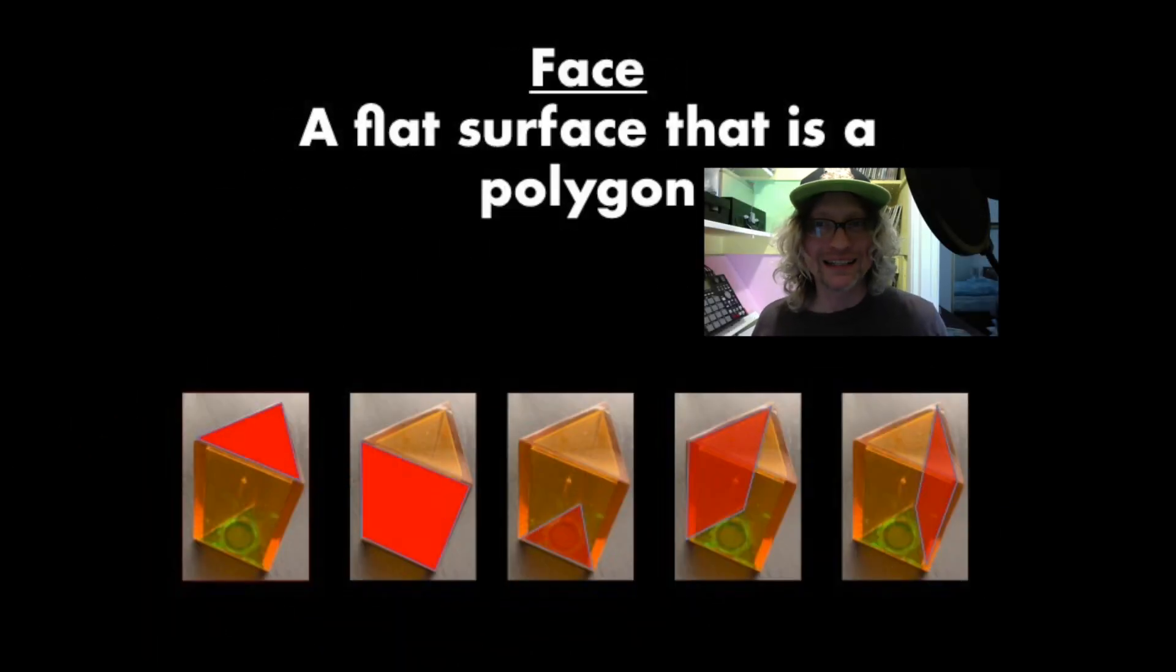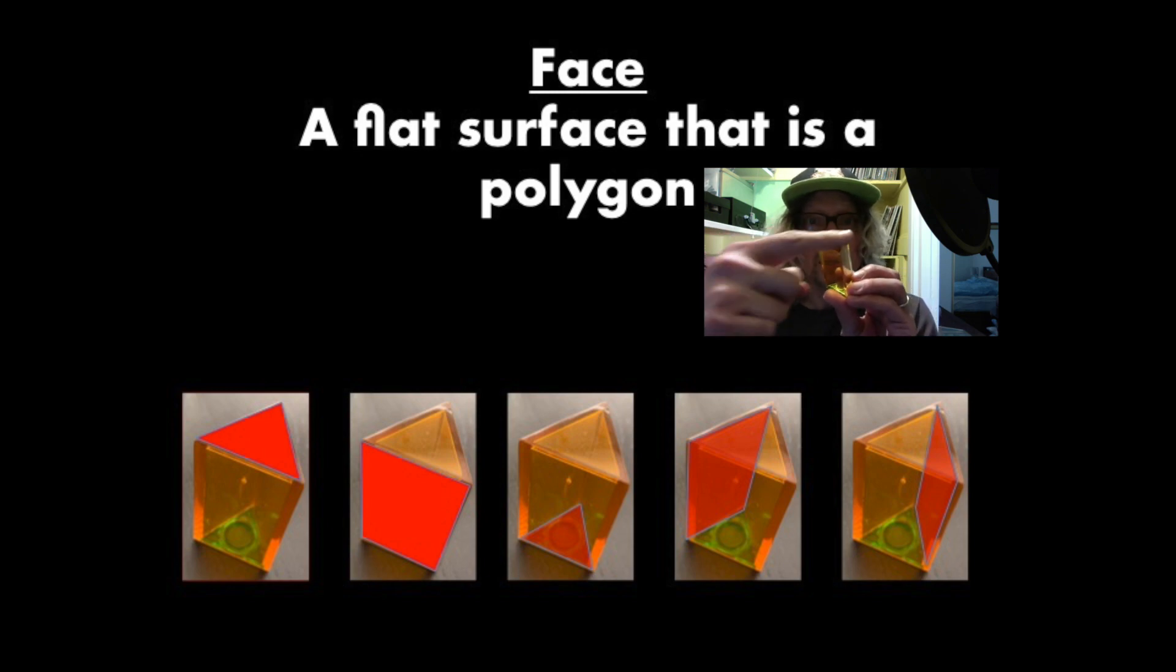The next vocab word is face. Our definition is going to be a flat surface, which is a polygon. And I'm going to go ahead and use the same example that's in the diagram to try to make a little bit more sense of it. So if we look at this triangular prism right here, we can see that it has a polygon on top, a flat surface that's a polygon.